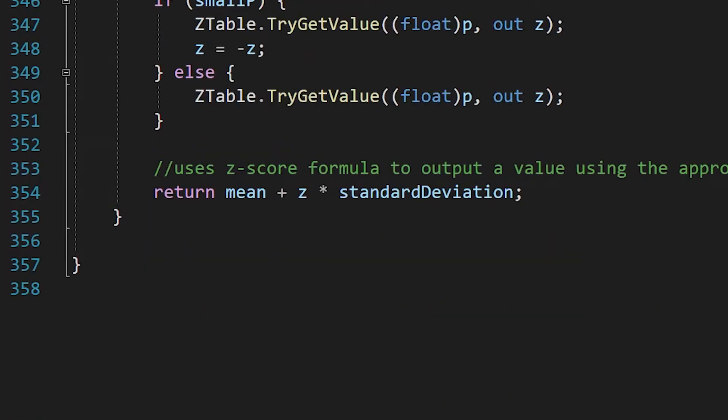And now that we have a z-score, we can get an actual value to return. By manipulating the z-score formula, we can see that we need to return mu plus z times sigma. And this should make sense, because remember, a z-score is just the number of standard deviations of value is from the mean. So we start with the mean and add the number of standard deviations, times the value of the standard deviation.